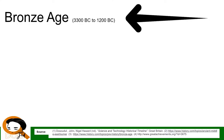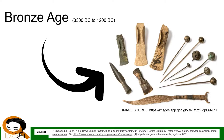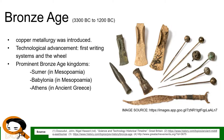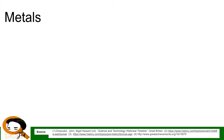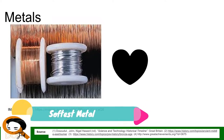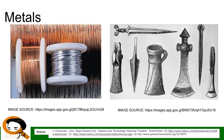The Bronze Age, 3300 BC to 1200 BC, saw the introduction of copper metallurgy. Technological advancements included the first writing systems and the wheel. Prominent Bronze Age kingdoms include Sumer and Babylonia in Mesopotamia, and Athens in Ancient Greece. For the Metal Age, lead (Pb), one of the softest metals, was extracted from rock in 6500 BC in Anatolia — now Turkey — followed by copper (Cu) about 3000 years later in Mesopotamia.